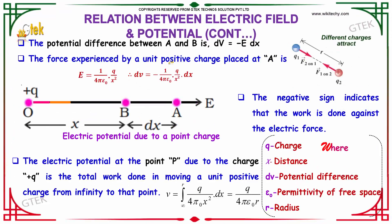The potential difference between A and B is dV = -E·dx. The force experienced by a unit positive charge placed at A is E = (1 / 4πε₀) · (q / x²).